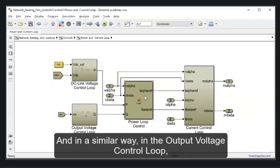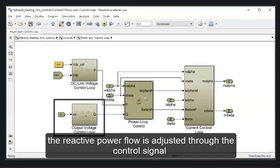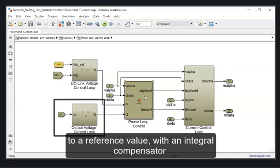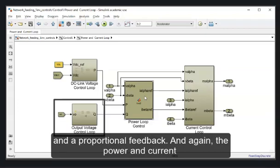And in a similar way, in the output voltage control loop, the reactive power flow is adjusted through the control signal generated by comparing a measured output voltage to a reference value with an integral compensator and a proportional feedback.